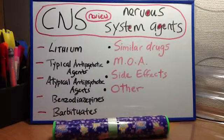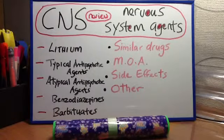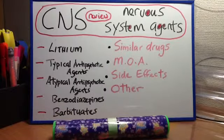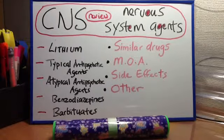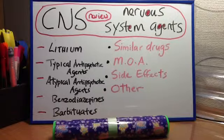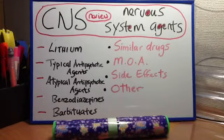Barbiturates. Similar drugs include phenobarbital, thiopental, and secobarbital. MOA: potentiate GABA receptor activity, decreased activity of CNS neurons. Clinical uses: sedation, induction of anesthesia, and management of seizures. Side effects: sedation, nausea, and teratogenicity. Other: induces cytochrome P450, leading to decreased levels of drugs such as digitalis, phenytoin, and griseofulvin. Patients experience withdrawal symptoms, and overdose is characterized by cardiac and respiratory depression.